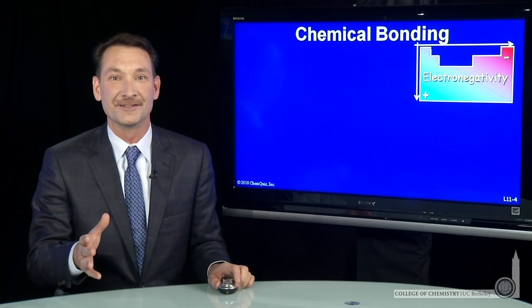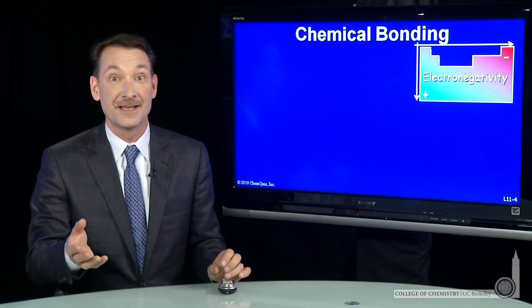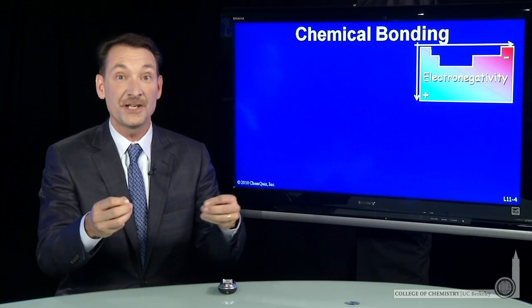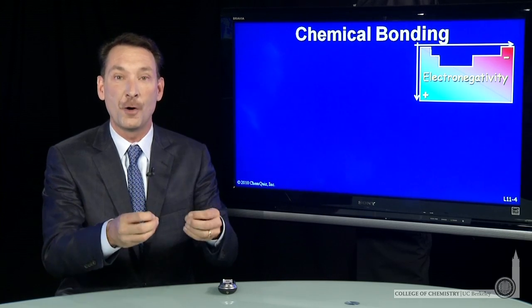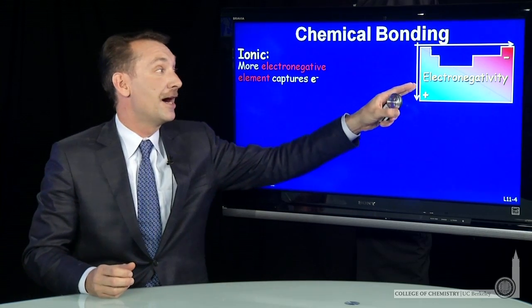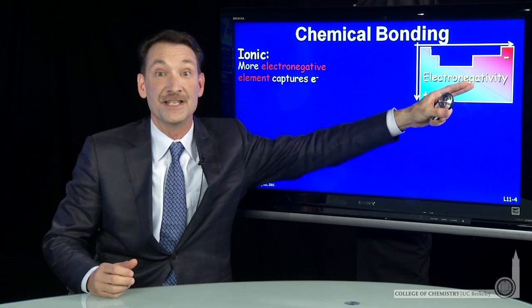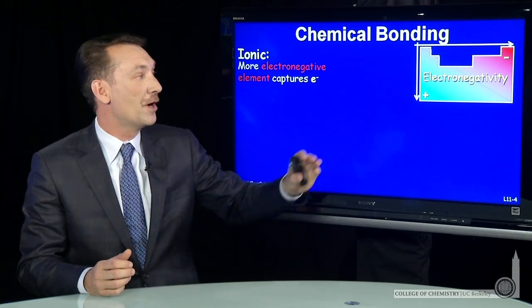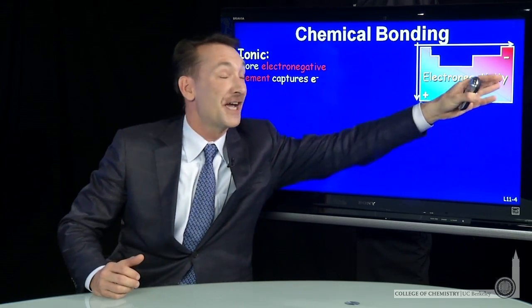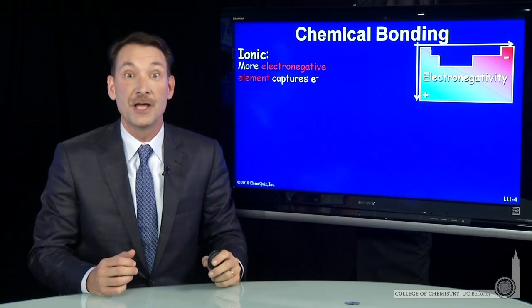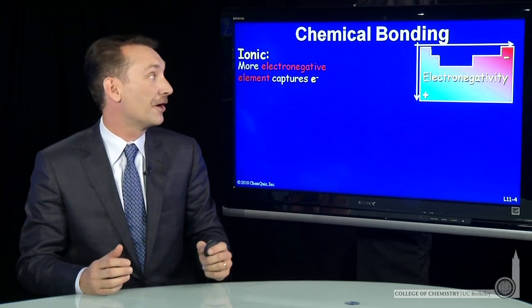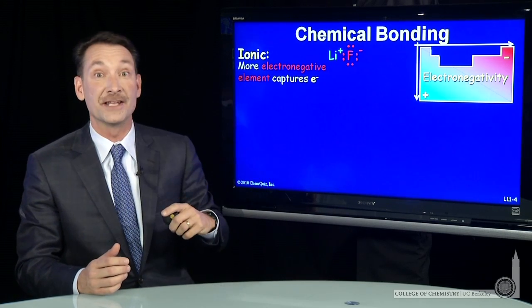Chemical bonds are characterized in a variety of ways. Ionic bonds, for instance, are where the electron is transferred from one element to the other, and it's a plus-minus coulombic interaction that holds the bond together. That occurs when the electronegativity difference is very large between the two elements. So if an element from one side of the periodic table bonds to an element on the other extreme, you're likely to have an ionic bond. Lithium fluoride is an example of that.